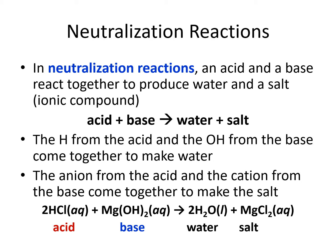Let's look at an example. When HCl reacts with magnesium hydroxide, we get water and magnesium chloride as a result. The H and the OH are coming together to make water, and the magnesium and the chlorine are coming together to make the salt.